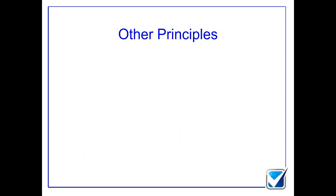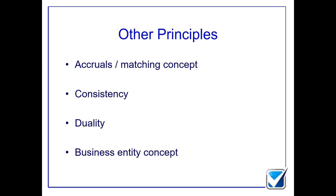Other key principles include the accruals or matching concept, which says income and expenditure should be matched to the period in which they are incurred or earned — matching to the period comes first. The consistency concept says that if you have two transactions of the same type, you should record them in a similar way. Consistency within your own financial statements, and across an entire industrial sector, will allow for comparability.